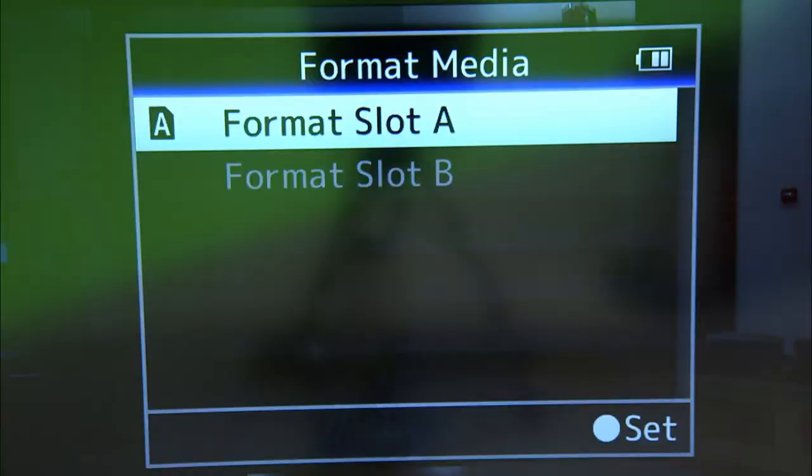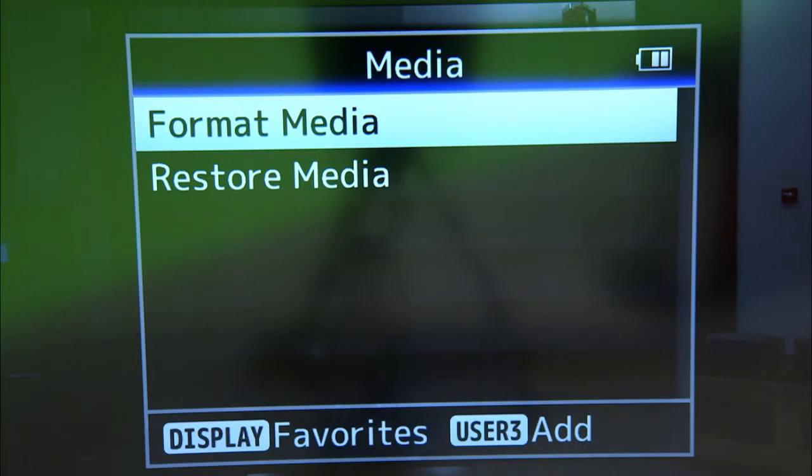Now formatting will get rid of all of the information that is currently on the card. So it'll free it up for you to use on your current shoot. Make sure you back up your card before you do this because that information will be gone and unretrievable. Once you've got your card formatted go ahead and cancel out and we'll format the camera itself.